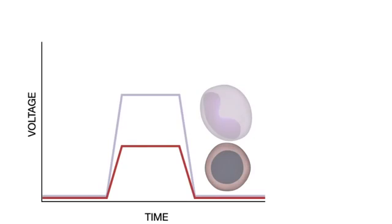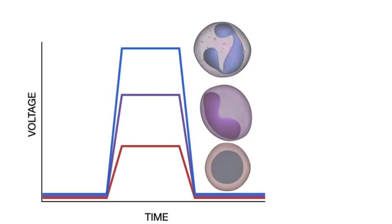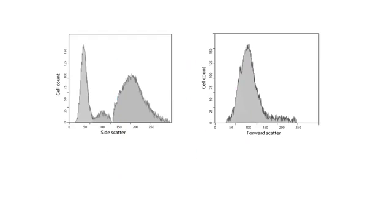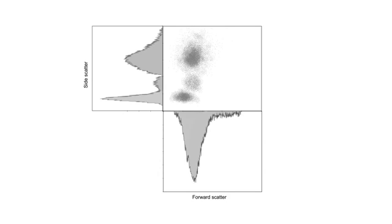Just like with forward scattered light, the flow cytometer converts the detected side scattered light into a voltage pulse, which is directly proportional to the amount of side scattered light. By analyzing the forward and side scattered data together, the researcher can understand a cell's size, shape, and complexity.